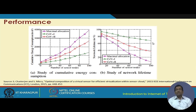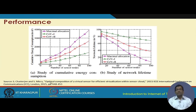The homogeneous sensor scenario — where sensors are from one geographic location with the same specification — yields better network lifetime. These two scenarios of cumulative energy consumption and network lifetime comparisons between CoV1 and CoV2 are detailed further in the paper 'Optimal Composition of a Virtual Sensor Node for Efficient Virtualization within Sensor Cloud,' published at the IEEE ICC conference in London in 2015.